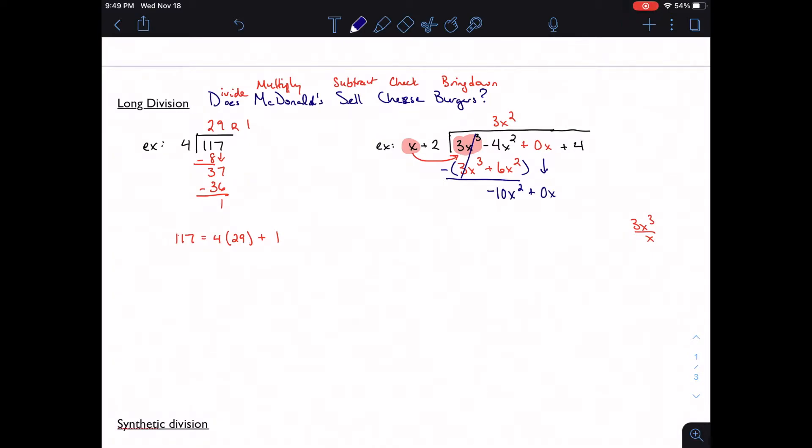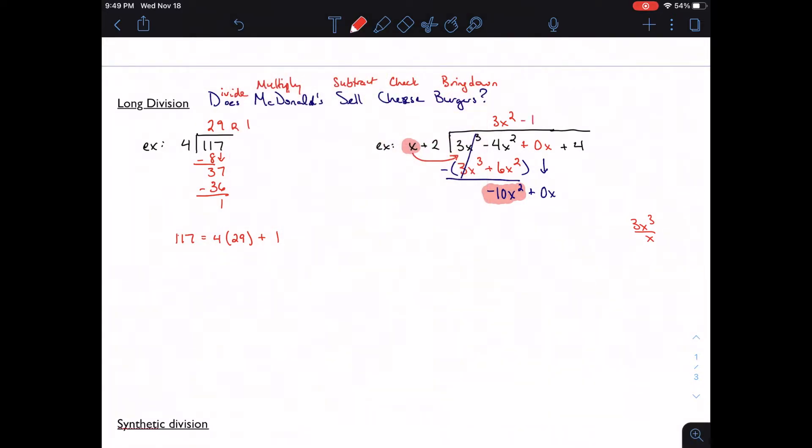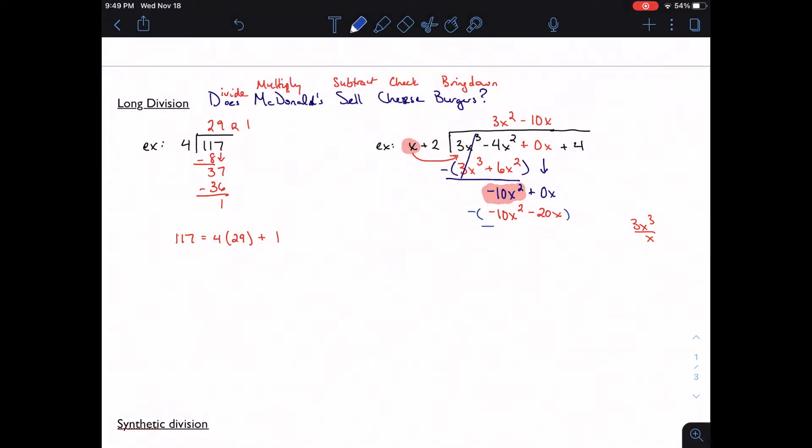So again, does x go into negative 10x squared? Yes, it does. How many times? Negative 10x. So multiply, negative 10x squared minus 20x. We're going to subtract. I've got positive 20x. I'm going to bring down the 4.